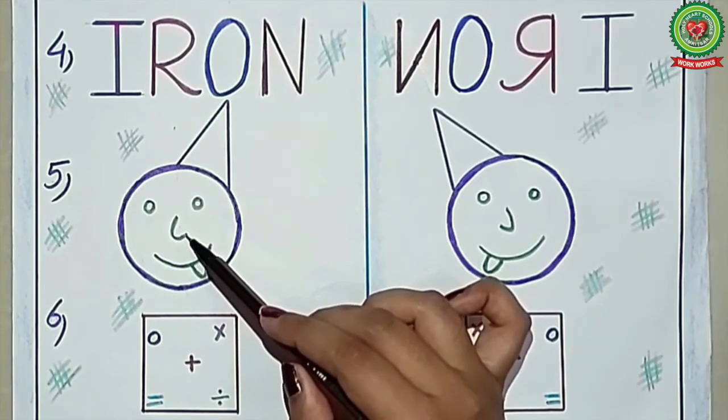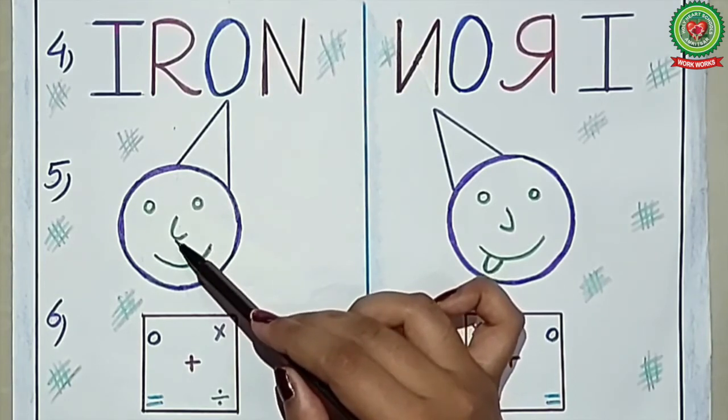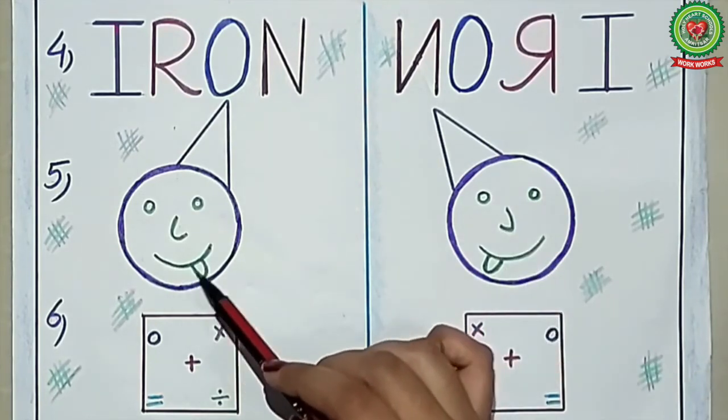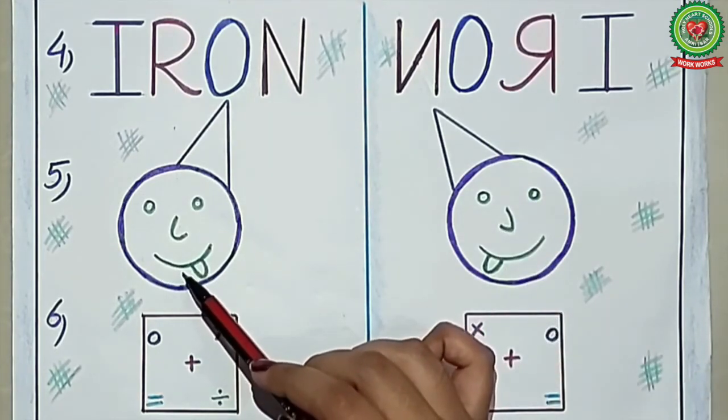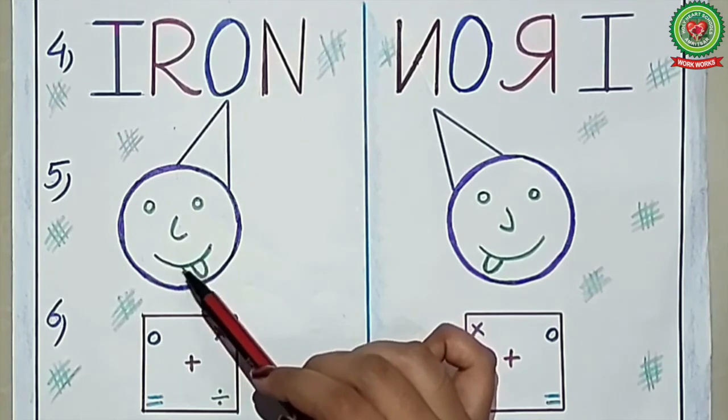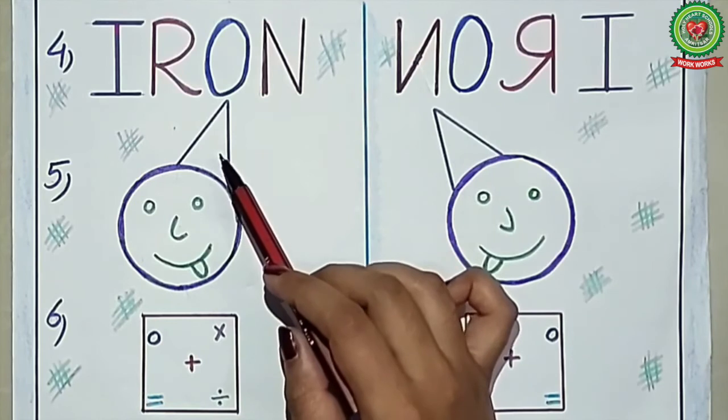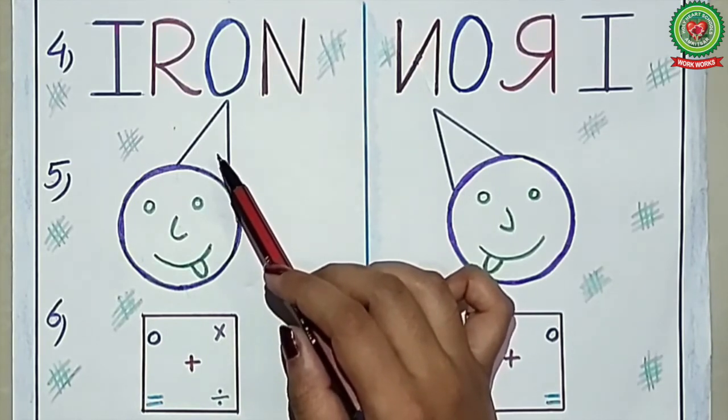The nose is not symmetrical, so left becomes right and right becomes left. The mouth is not symmetrical, so left becomes right and right becomes left. You can see the cap on the face on the right side, so the image of this cap is on the left side.